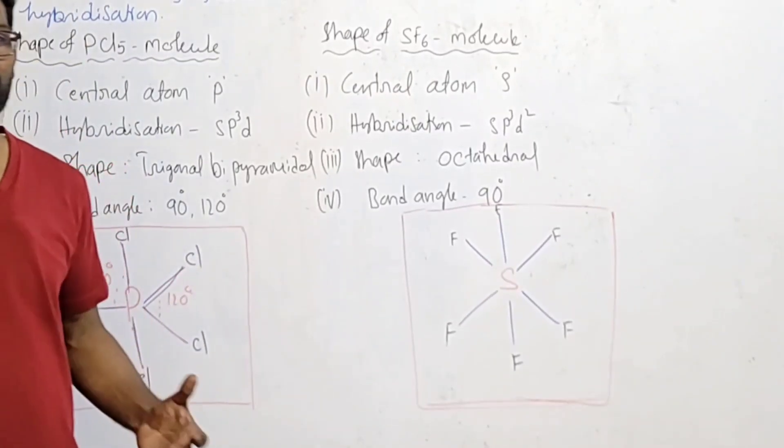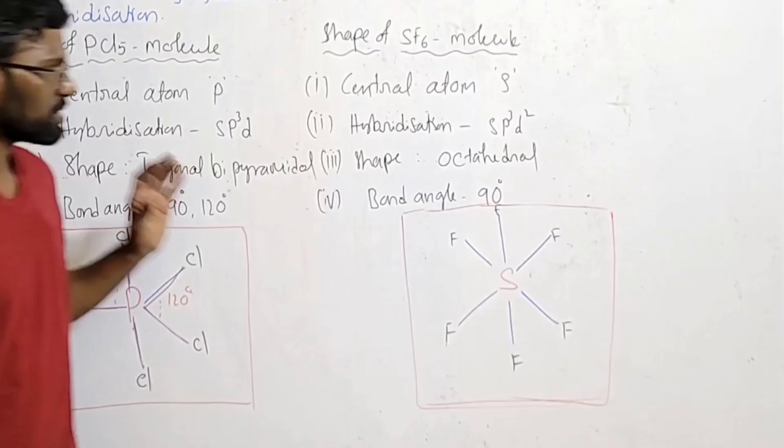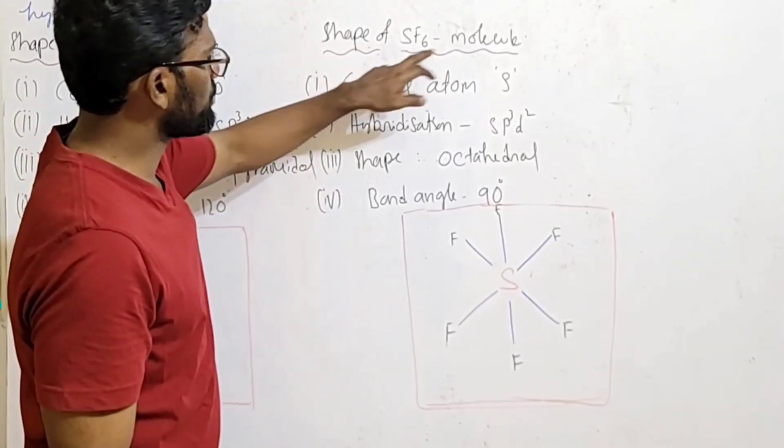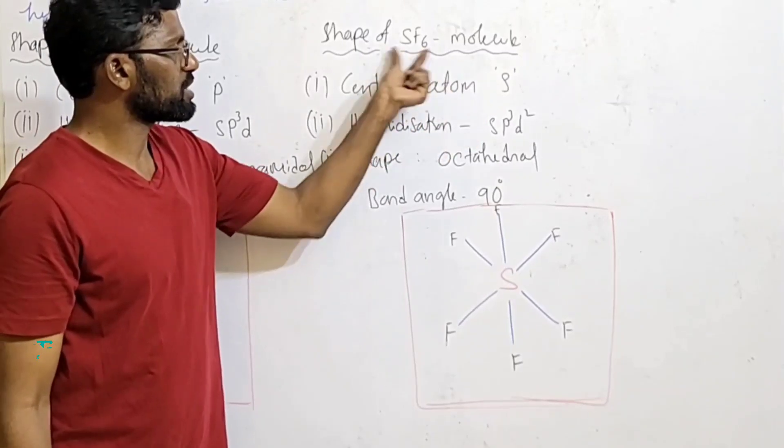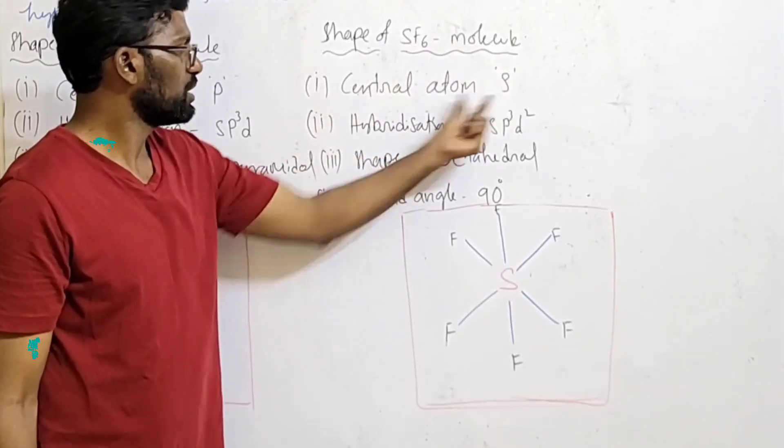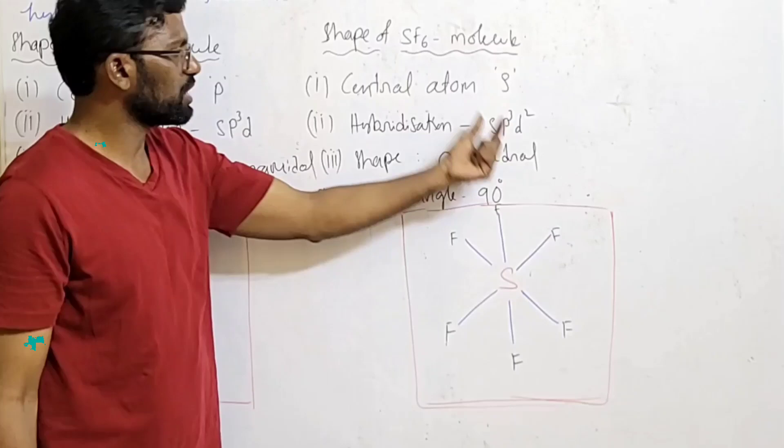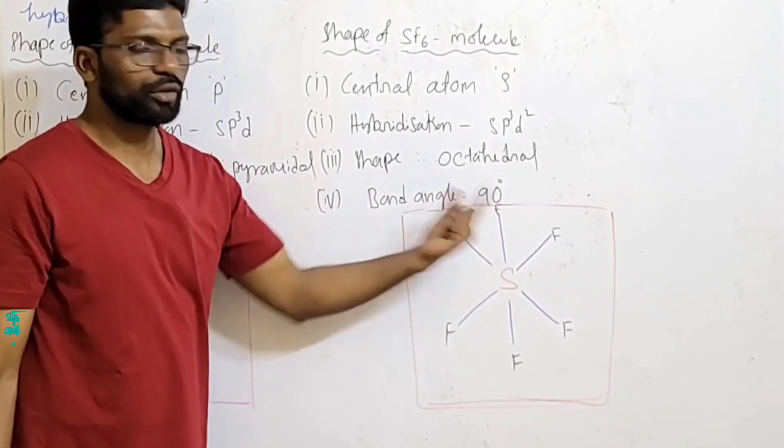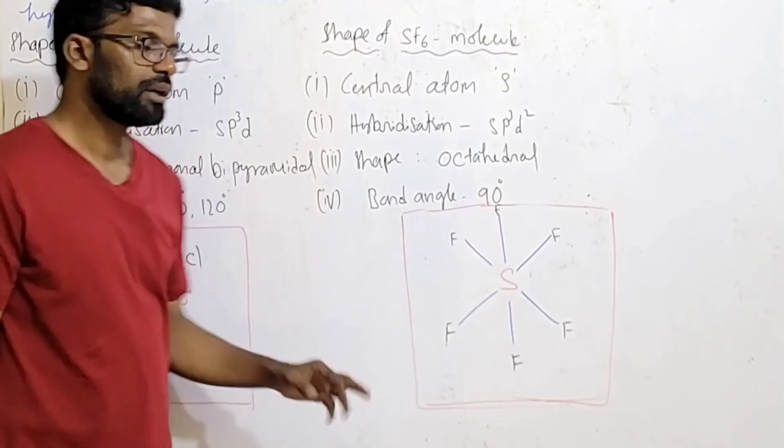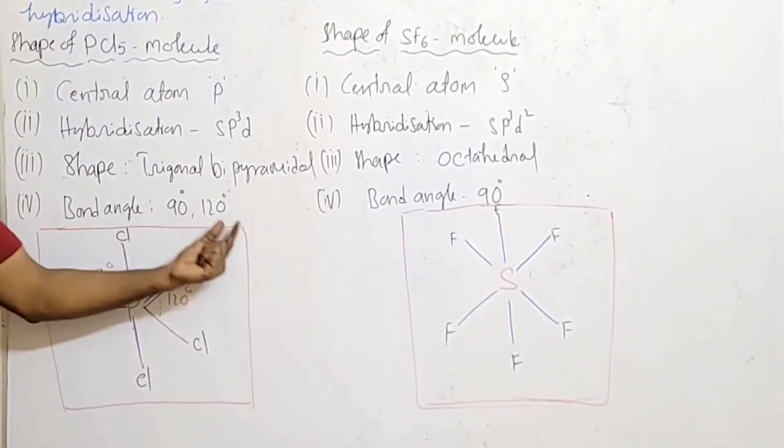Next, similarly, shape of SF6 molecule - same points repeat. Central atom: sulfur. Hybridization: sp3d2. Shape: octahedral. Bond angle: 90 degrees.